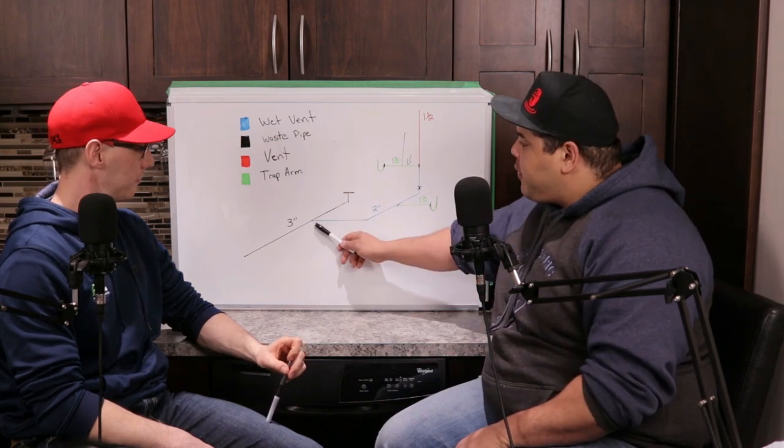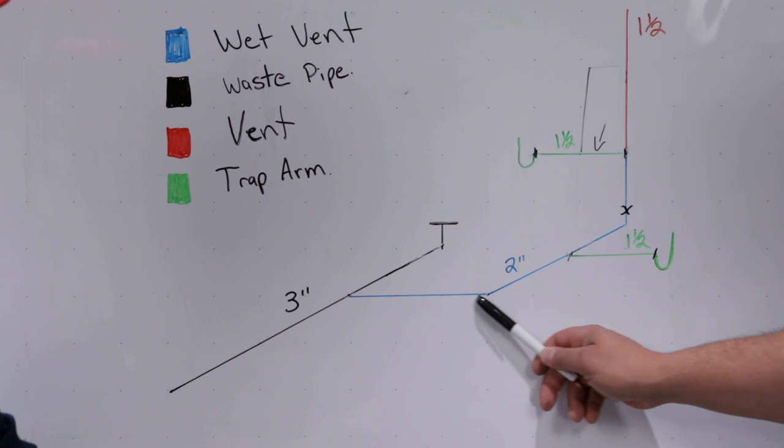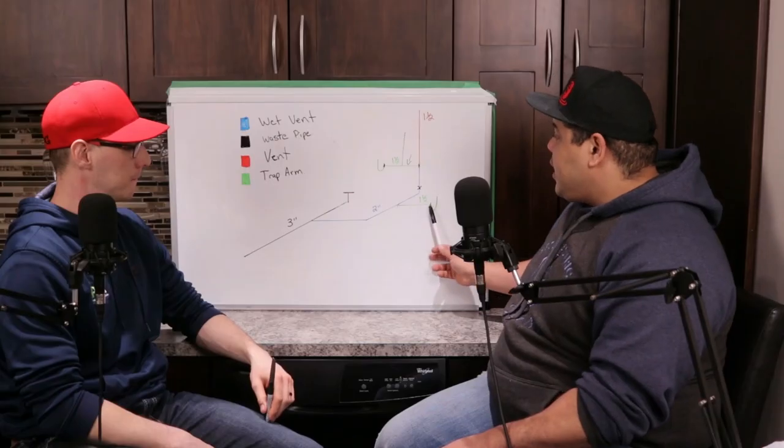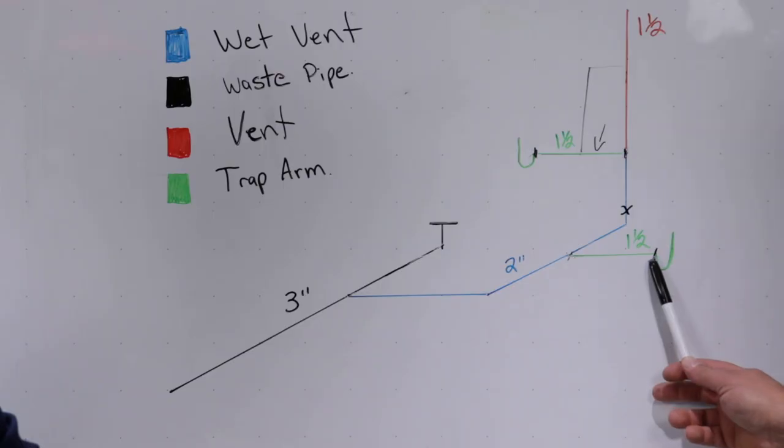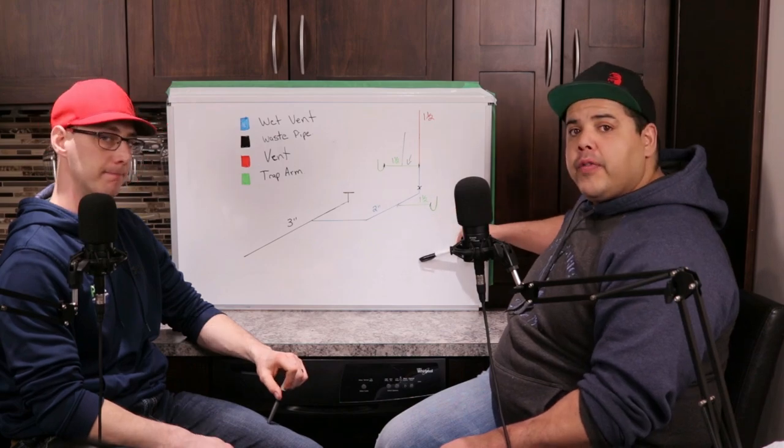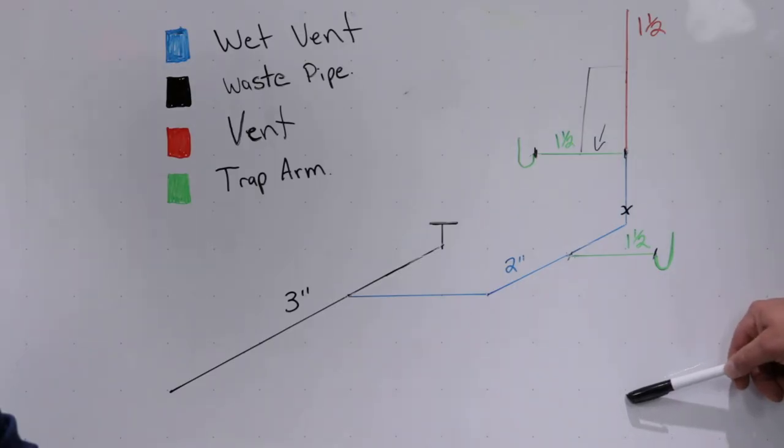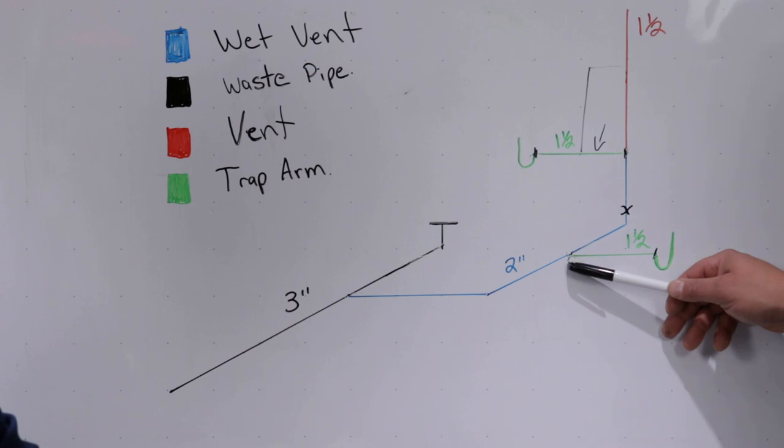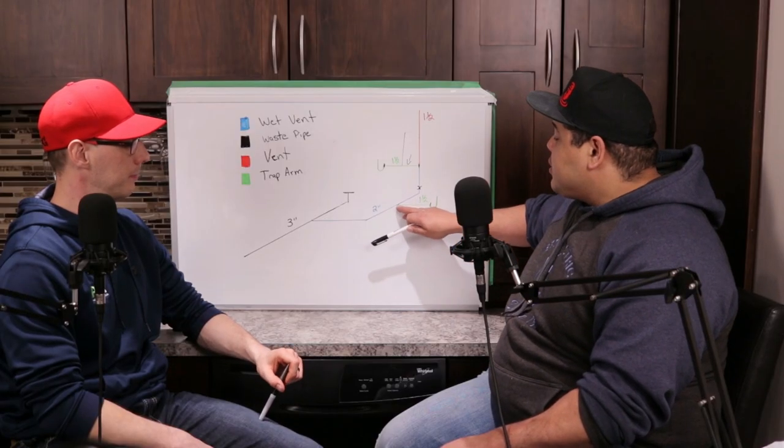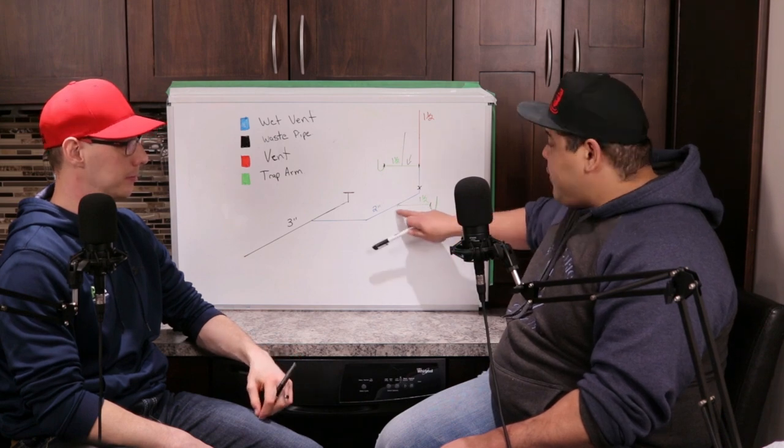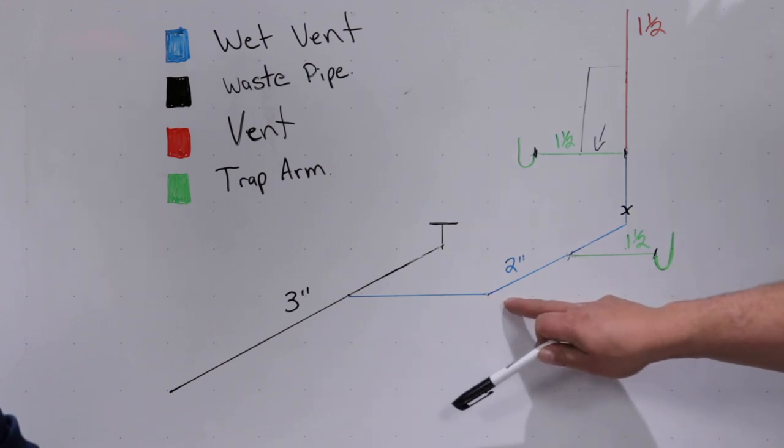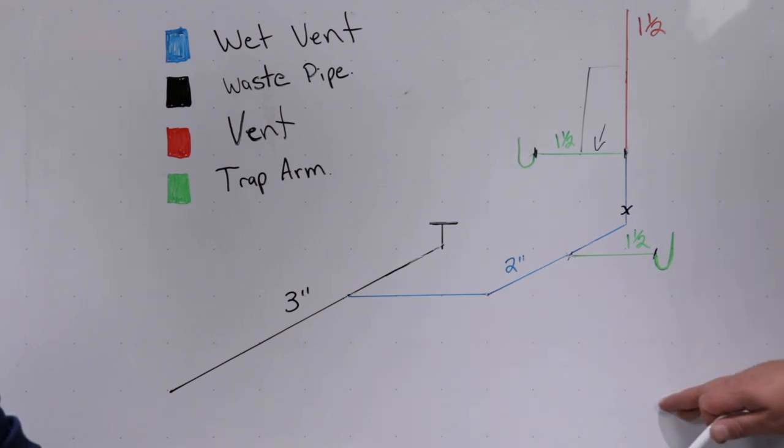That rule will now come into play for where this wet vent is, where you run this. Because if this bathtub drain is now way over here and it's eight feet from here to here, that's illegal. You're not allowed to do that. You could do that if you ran it in two inch, but let's say you just had inch and a half. If you had inch and a half, the furthest you could run this is six feet. So if you're going further than six feet, you would want to run this drain closer to where that trap arm needs to be and then come back and go up into your wall.